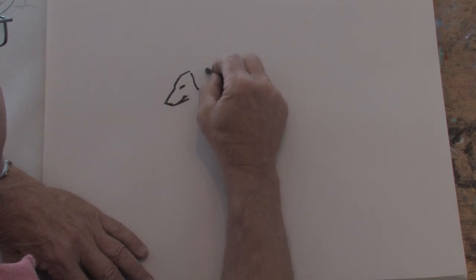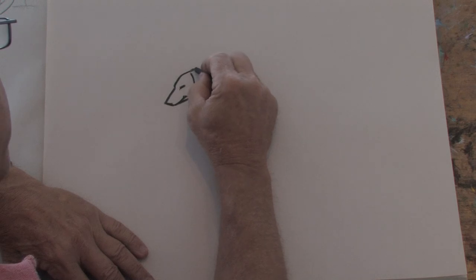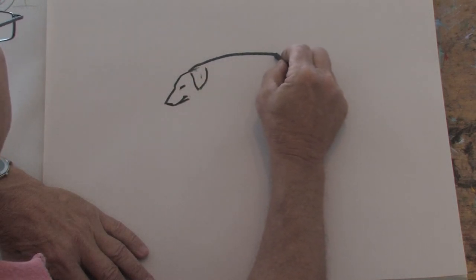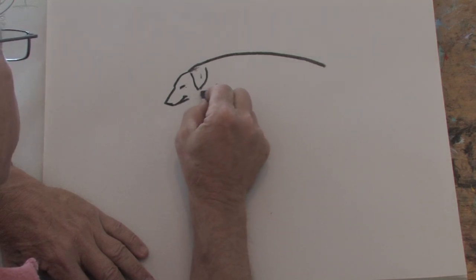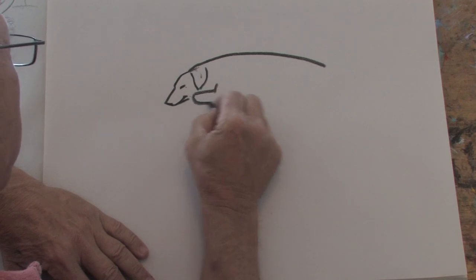And I'm going to put his ear down like this. They would not be up, because he's sleeping. And I'm going to bring his back around like that. And I'm going to put his front paw sort of curled up under him, like this.